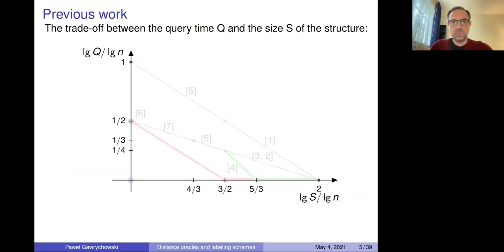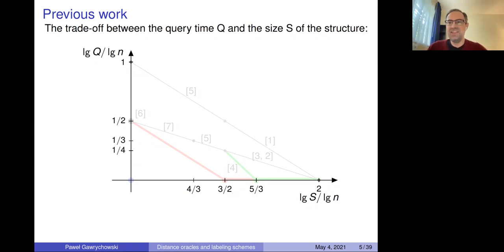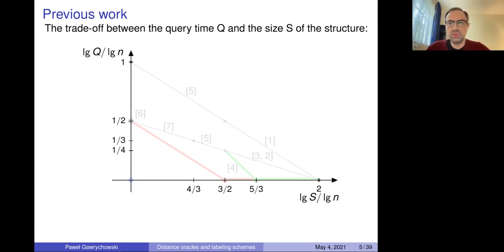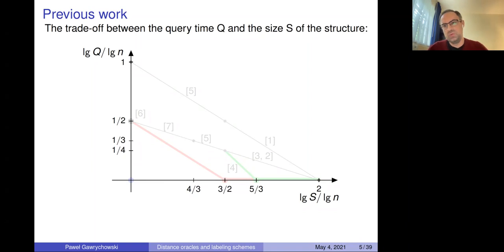We want to build a distance oracle for a planar graph on n nodes. Such graphs are sparse — the number of edges is O(n), so n is the only parameter. We consider the space of the structure and the query time. The naive solution is to store distances between each pair of nodes: n² space, constant query time. The other extreme is to store just the graph and compute shortest distances on demand, which takes linear time for planar graphs — giving a tradeoff.